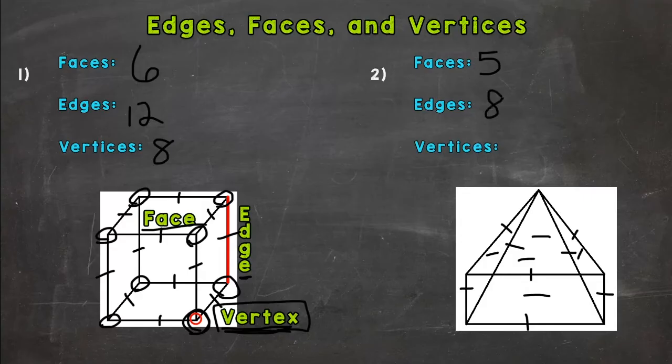Now let's do the vertices, where the edges meet to make a point, the corners. Going to the back right here, one. The front right, two. Front left, three. Back left, four. And then we have the top, five. So we have five vertices for the rectangular pyramid.